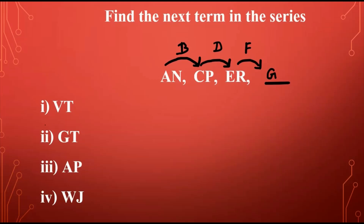Now let's look at the second letter in each term. Between N and P, there's only one letter — O: N, O, P. Between P and R, there is again only one letter, Q — P, Q, R. Which means after R comes S: R, S, T. So the next term in the series is G, T.